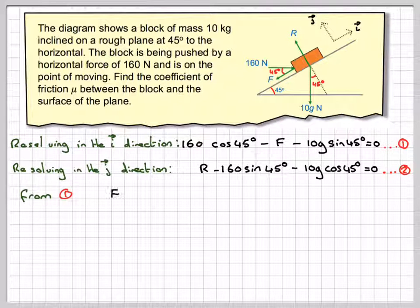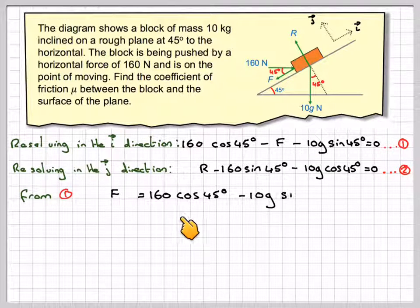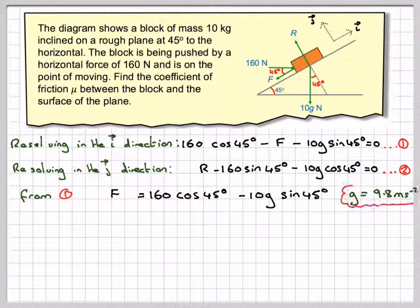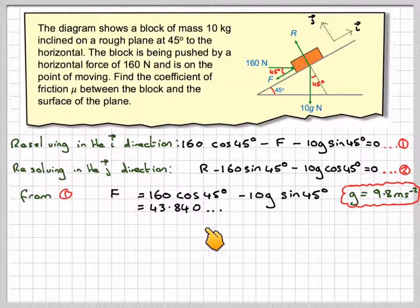From equation 1, we have F is 160 cos 45 minus 10g sin 45, and using g equals 9.8 meters per second squared, we're going to have 43.840.